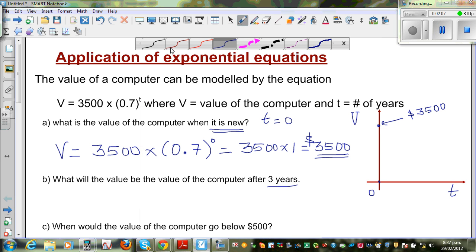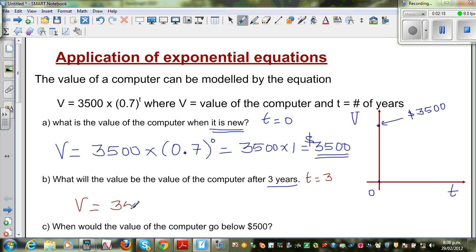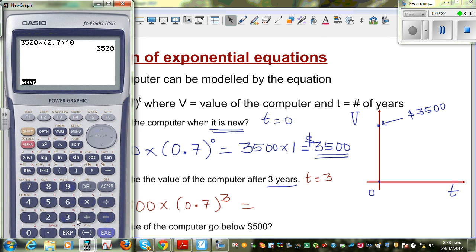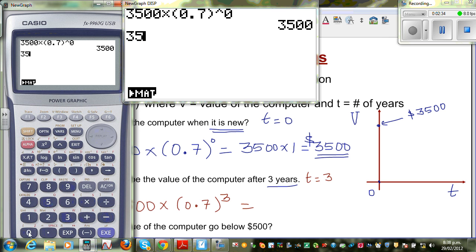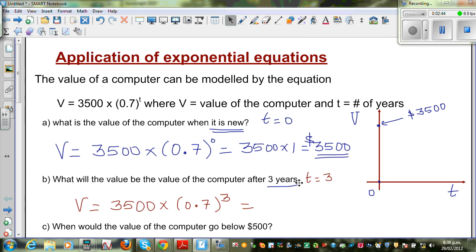Now for the next question, I am going to put t = 3 years. So value after 3 years would be 3500 × (0.7)^3. Again we have to use the calculator. So this is 3500 times bracket 0.7 raised to 3, which gives you 1200.5. So I will write 1200.